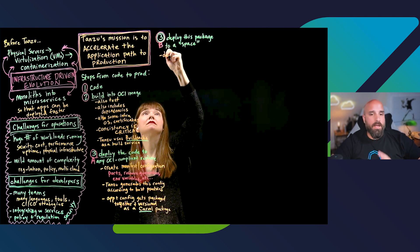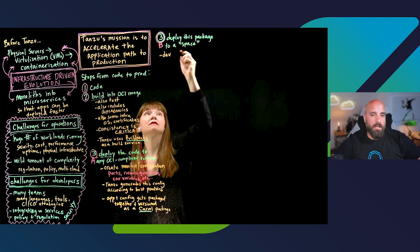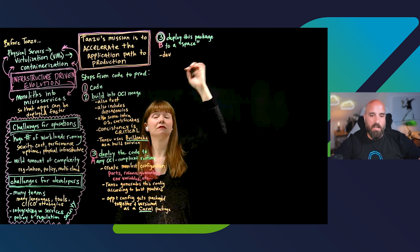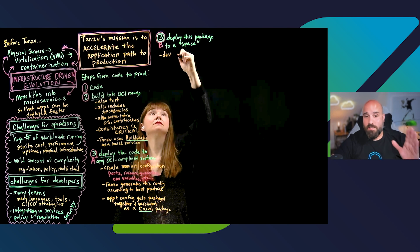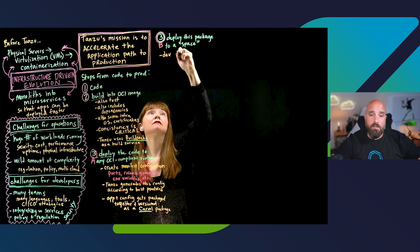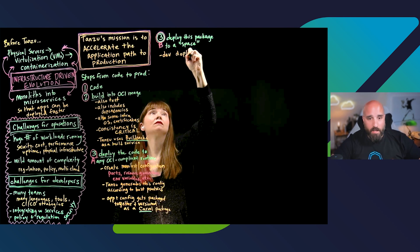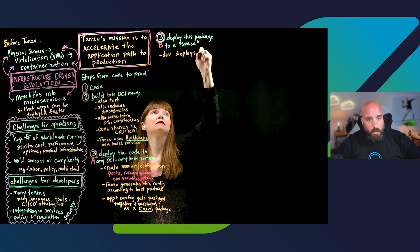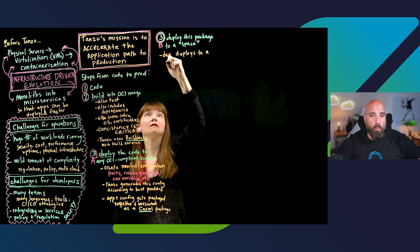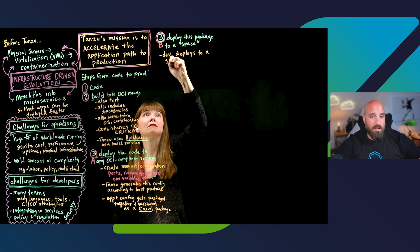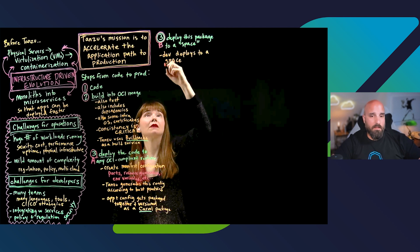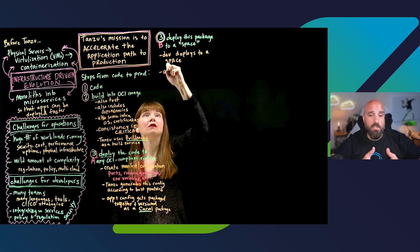A secured space can mean for the application engine that the workload will land on Tanzu Kubernetes Grid on VMware Cloud Foundation in an air-gapped environment. So when we deploy, we are not deploying into a specific cluster or a specific server — we are deploying into a runtime, into our kind of workload placement engine that decides where the right location for that workload will be.